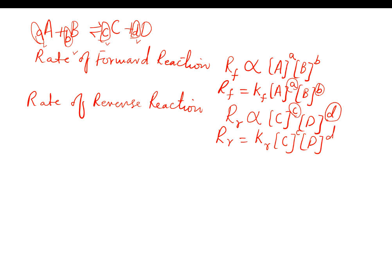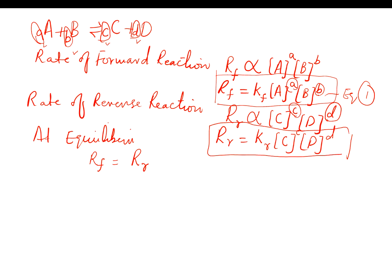At equilibrium, remember this: rate of forward reaction equals rate of reverse reaction. This first expression, equation one, is equal to equation two. So we put these values: Kf into [A]^a[B]^b will be equal to the rate of reverse reaction Kr[C]^c[D]^d.